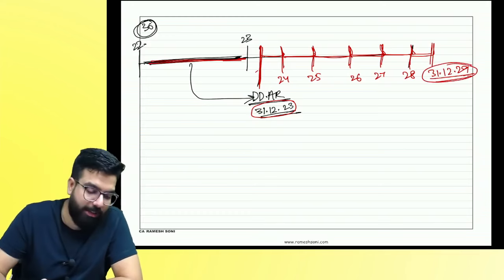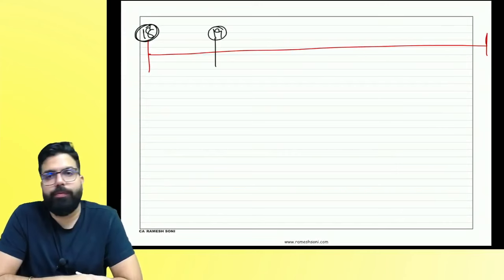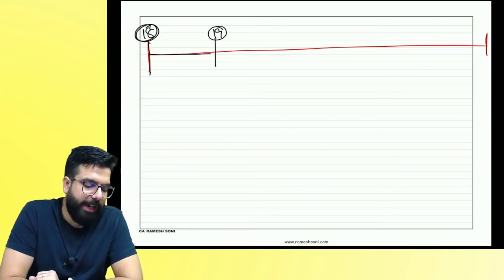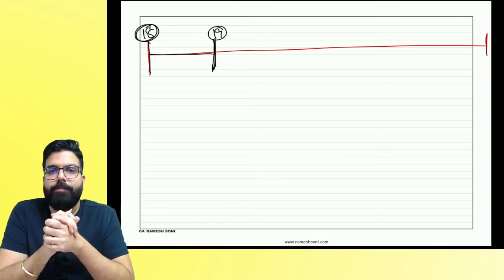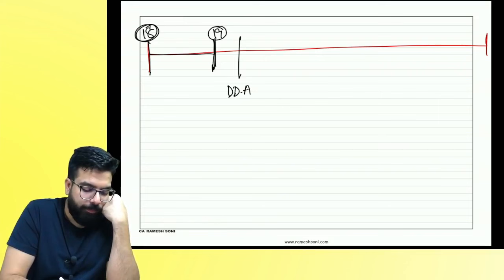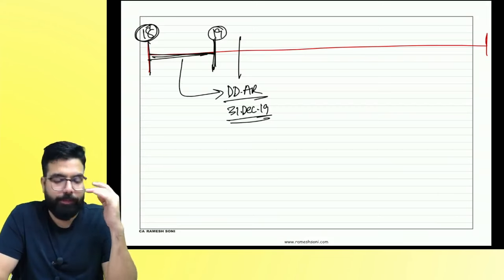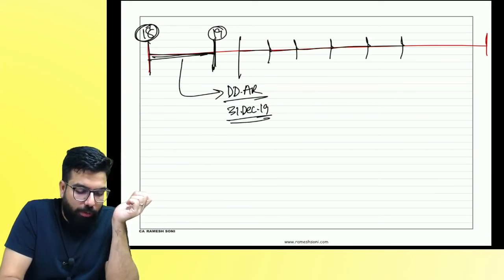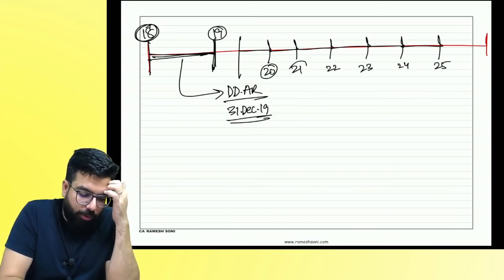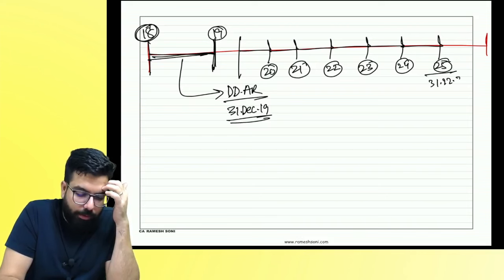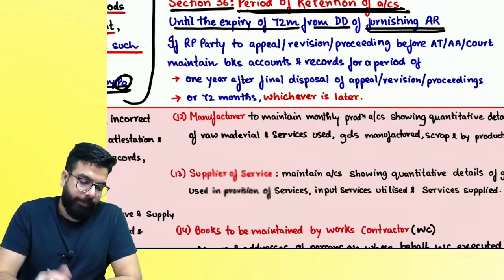However, if a registered person is party to an appeal, revision, or proceeding before the Appellate Authority (AA), Appellate Tribunal (AT), or court — whether filed by him or by the Commissioner — he shall maintain accounts for one year after the final disposal of such appeal, revision, or proceeding, or for 72 months from the due date of annual return, whichever is later.